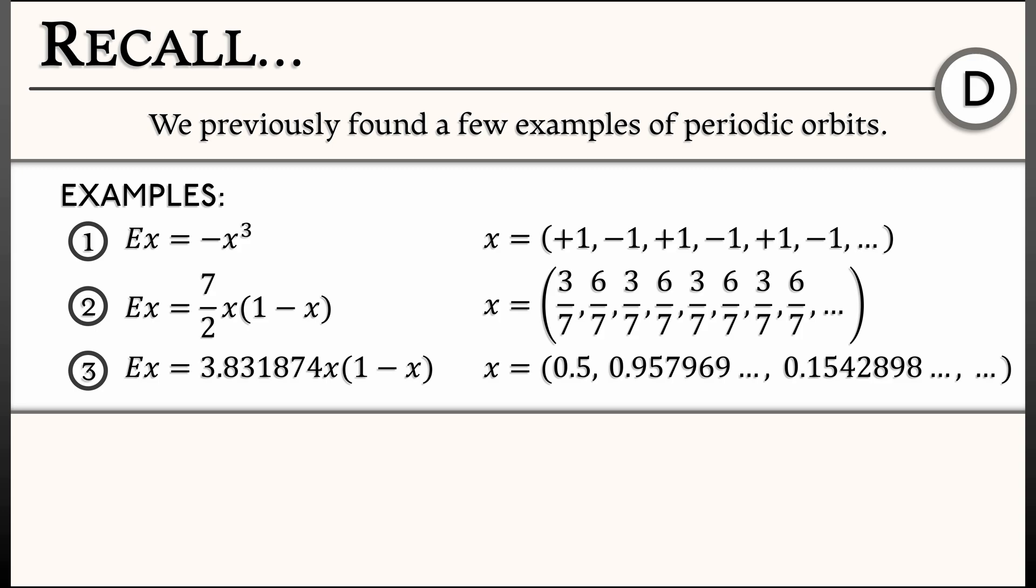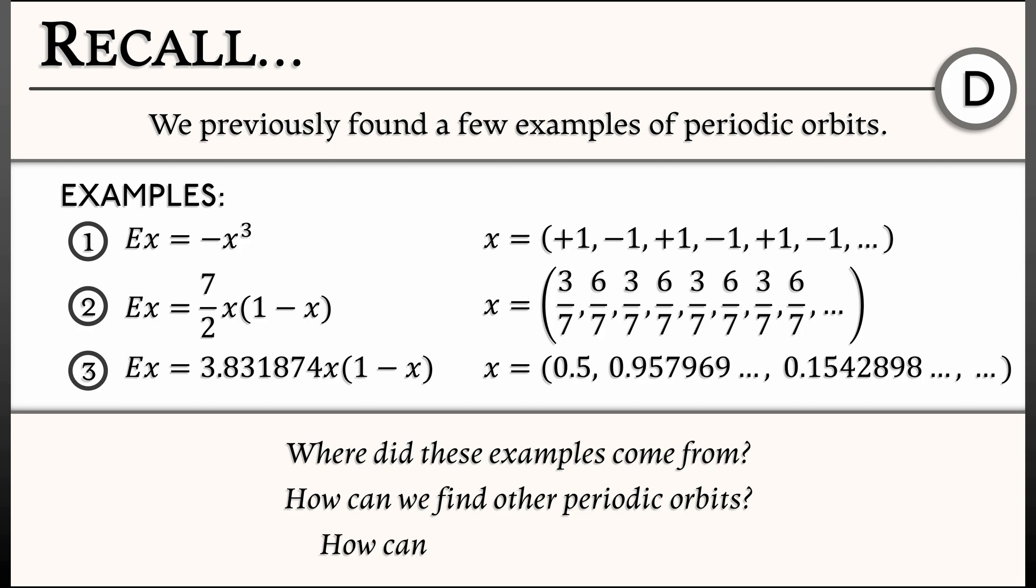But where did these examples come from? How did I come up with them? How do we find other periodic orbits? And maybe most importantly, how do we determine their stability without having to resort to simulating and taking a guess?